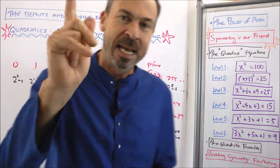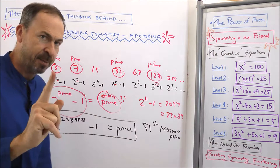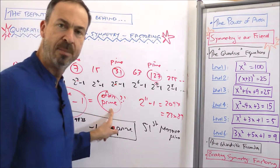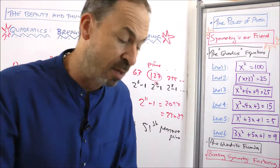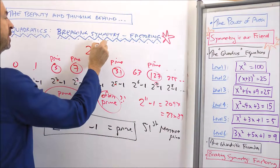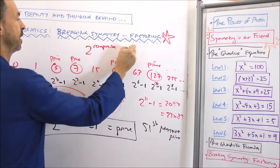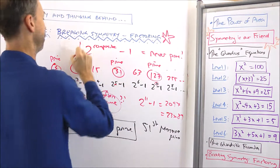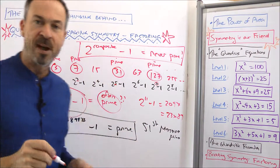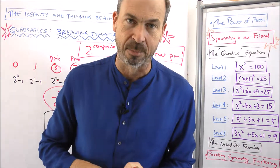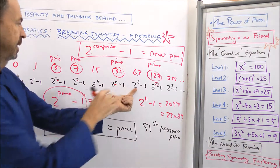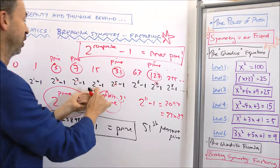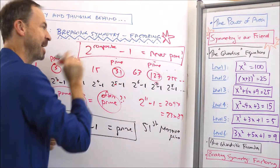Alright, but here's my question. Mersenne was a very clever mathematician. He knew that 2 to the prime minus 1 is sometimes prime and sometimes isn't. But he knew this in particular: if I took 2 to a composite number — composite number minus 1 — it's never prime. So no hope of finding primes if you go 2 to a composite number minus 1. For example, 2 to the 6 minus 1 is not prime, 2 to the 8 minus 1 is not prime, 2 to the 4 minus 1 is not prime. That is guaranteed.